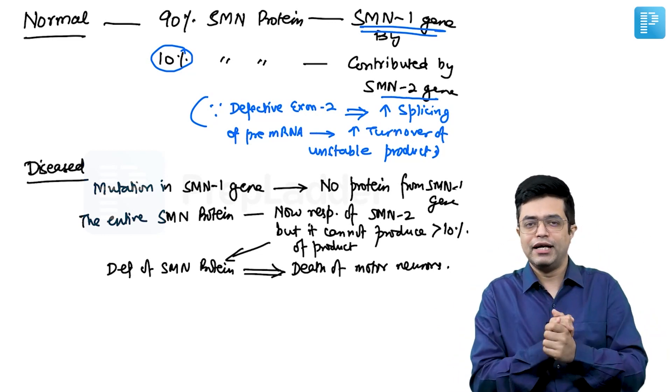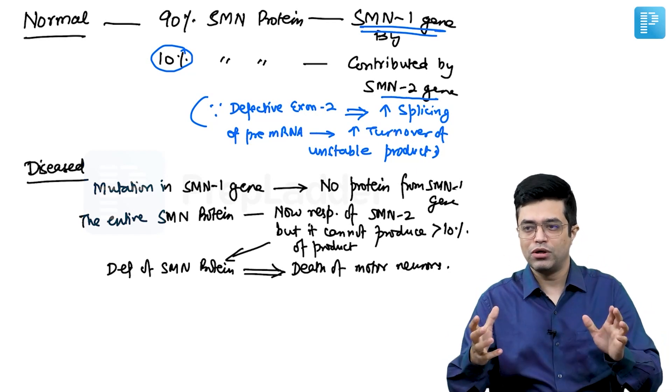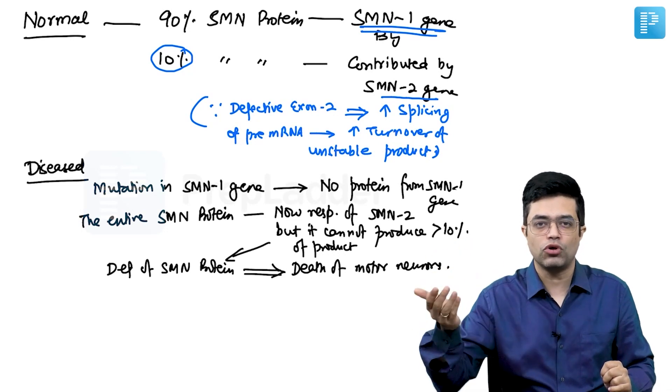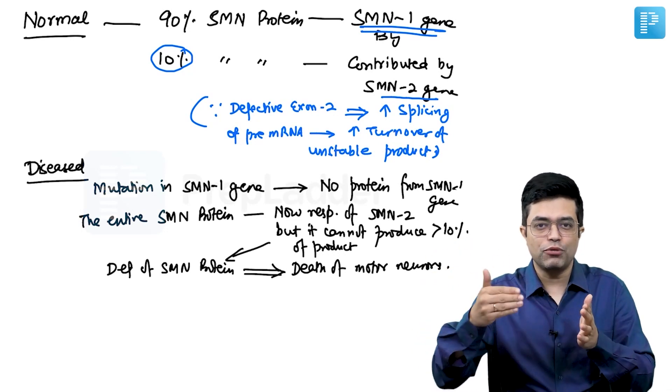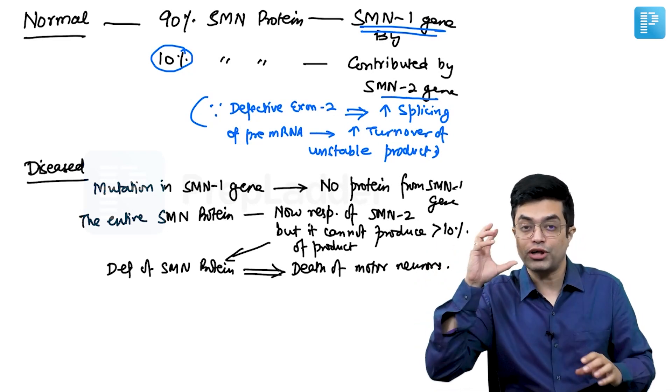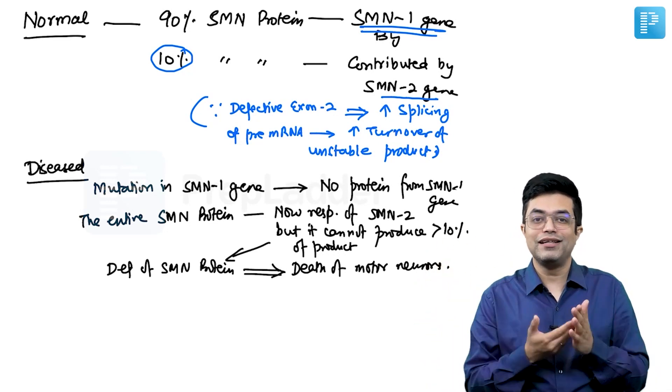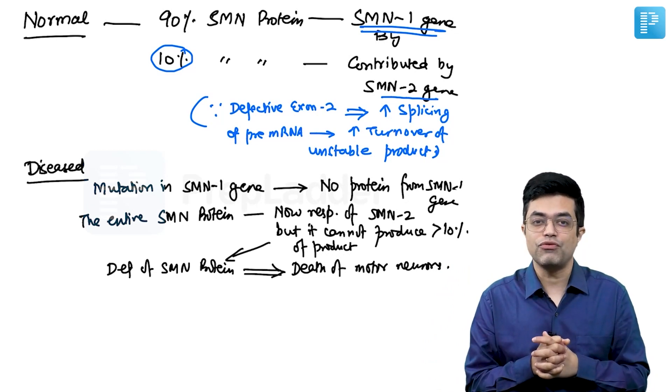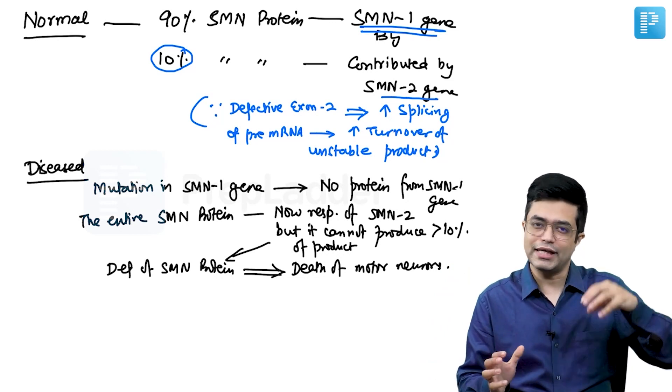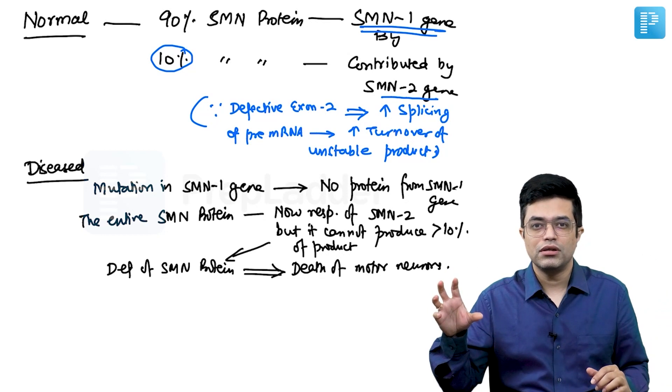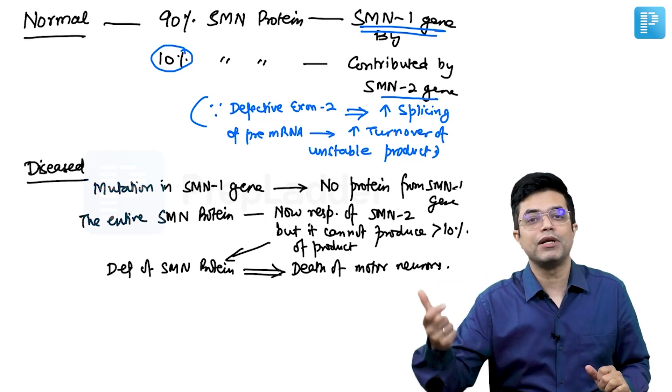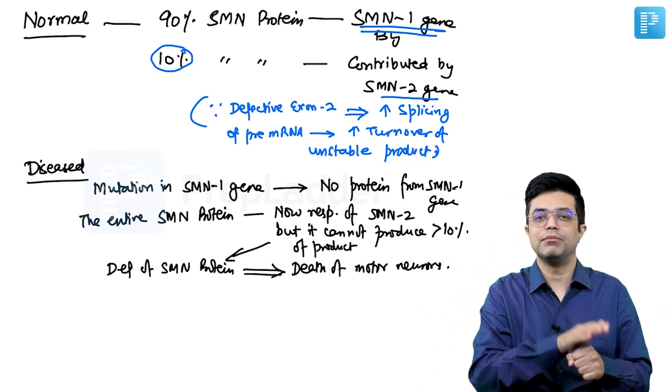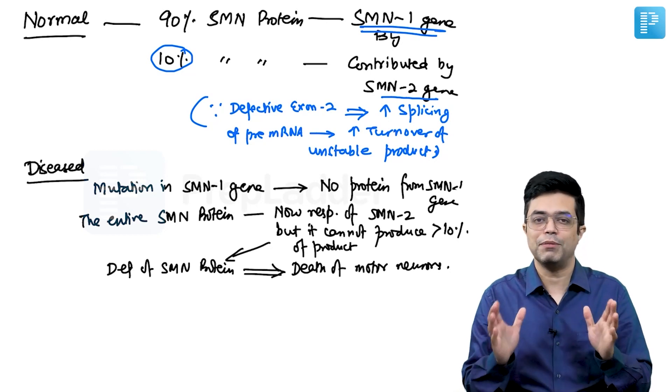What it also means is that if somehow this SMN2 gene, instead of there being one copy, there are two copies, three copies, or four copies, what will happen is each copy will produce 10% product, so 10, 20, 30, 40, so 40% protein is being able to produce. Still the disease will be milder. There are cases where spinal muscular atrophy is found to be mild. It is mild because SMN1 is lost, but SMN2, nature has ensured that multiple copies are there, and so the patient is able to undergo some protein synthesis. The patient is able to still produce some functional protein, so the disease will be mild.